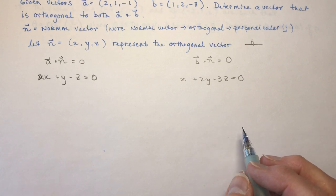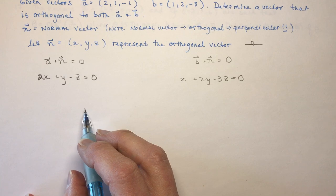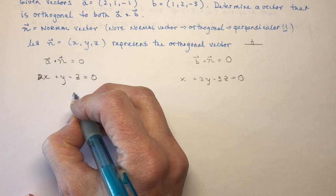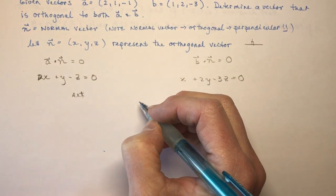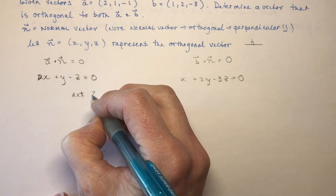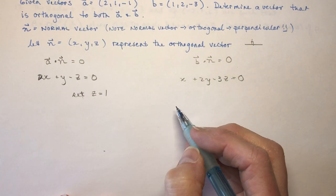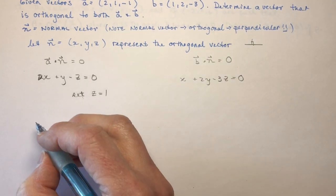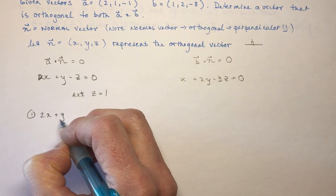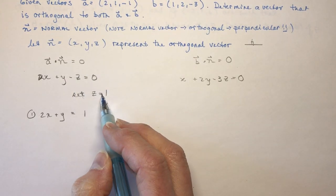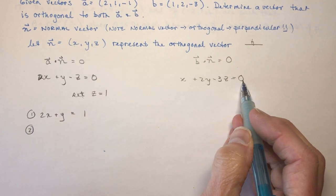Now, this may sound really random. And again, the reason is because there are so many possibilities. So if we just set Z equal to 1. Now, we're also going to find a much easier way to find an orthogonal vector in the next lesson called the cross product. So this is one of the ways. I'm not even sure that your teacher will expect you to even remember this because you're going to do the cross product and it's a much easier calculation. But let's follow through with this. So we have 2X plus Y is going to be equal to 1. Because that would be minus 1 and bring it over. So if Z is equal to 1. And then my second equation, I would have X plus 2Y is going to be equal to 3.